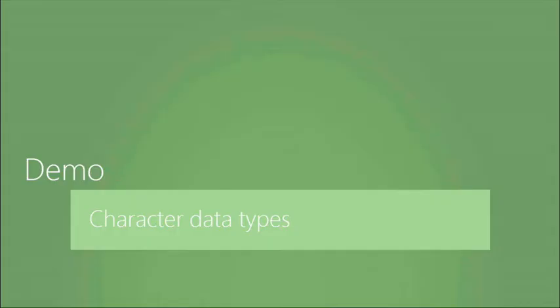The underscore wildcard replaces exactly one character, useful when you know part of a pattern — for instance, a two-character state code starting with 'A'. Tobias has already shown the Unicode demo, which was probably the cooler thing to show. Let's move on to date and time data types.